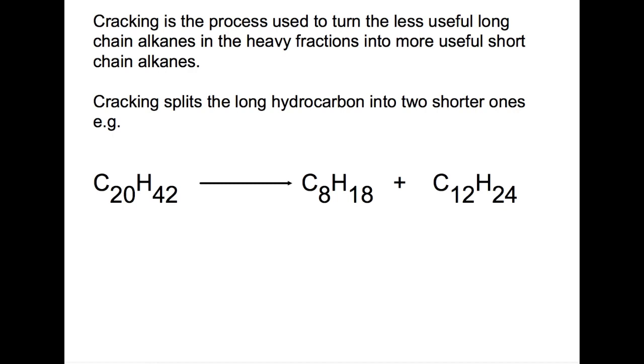The numbers of carbons and hydrogens remain constant. Here we start with 20 carbons. This splits up into a chain of 8 carbons and a chain of 12 carbons and you can see that these two add together.